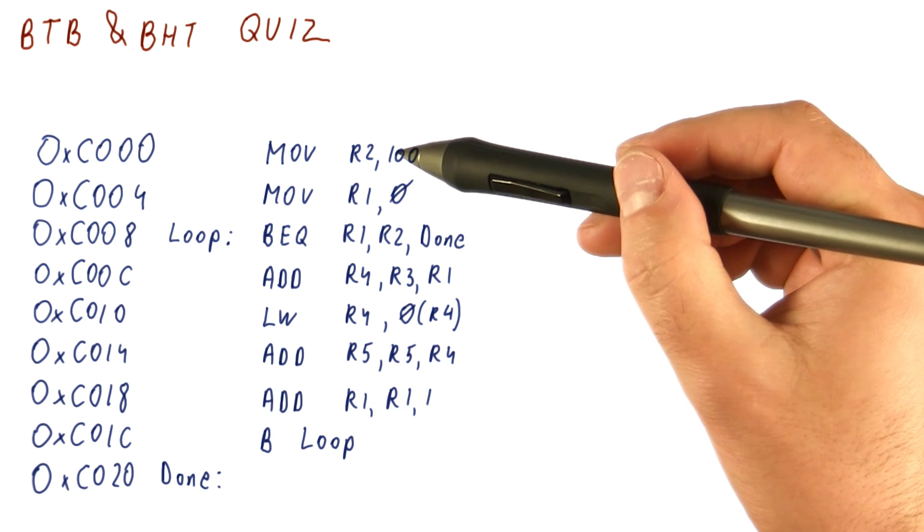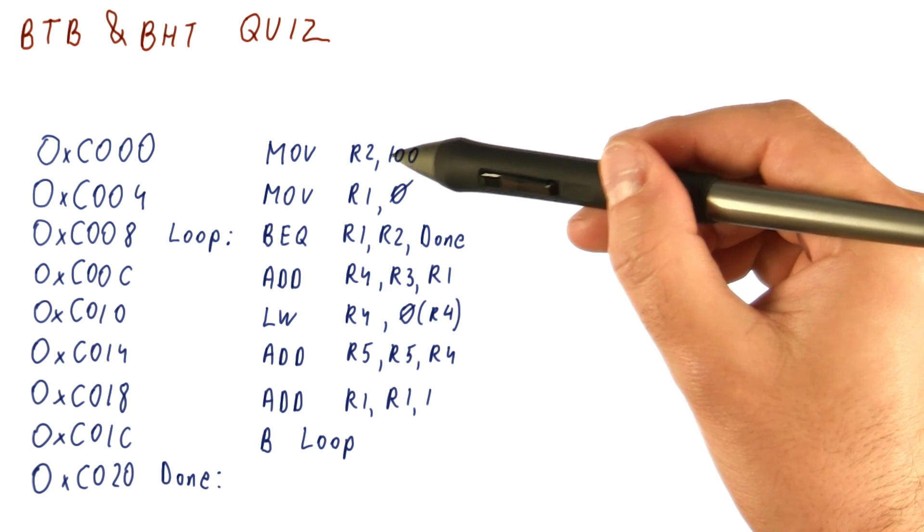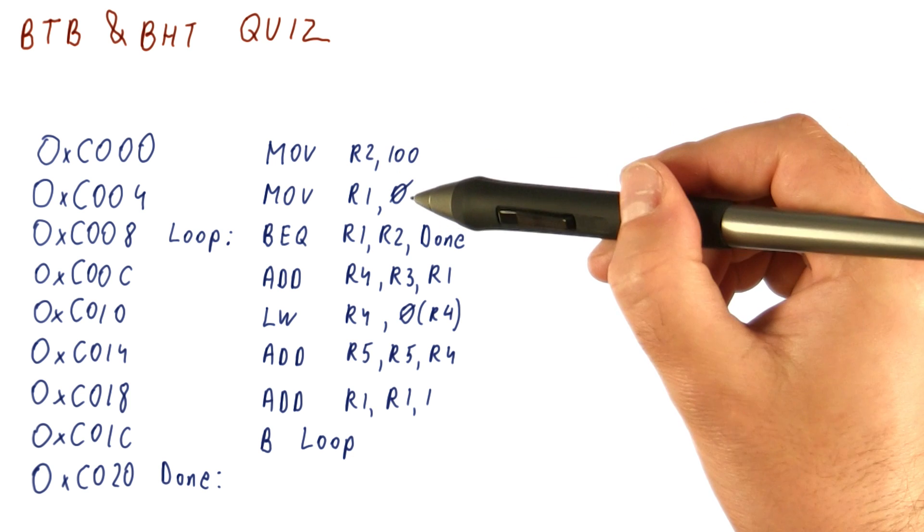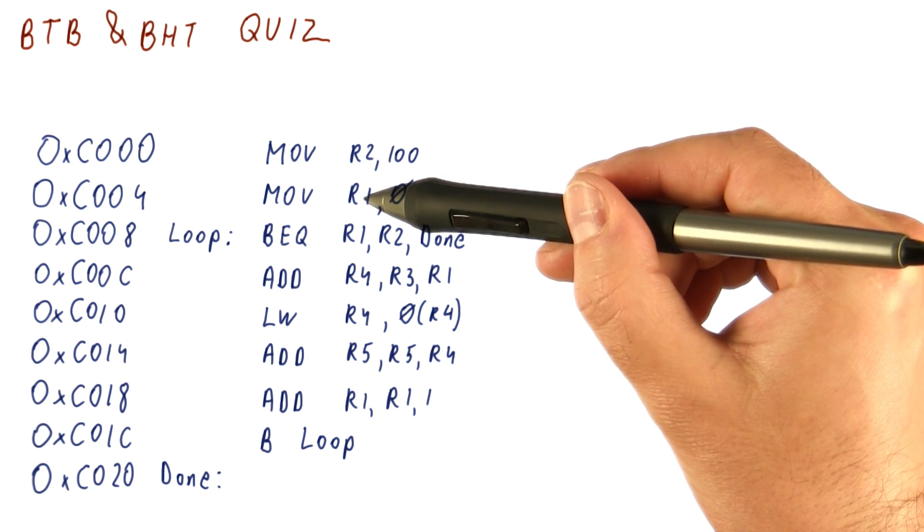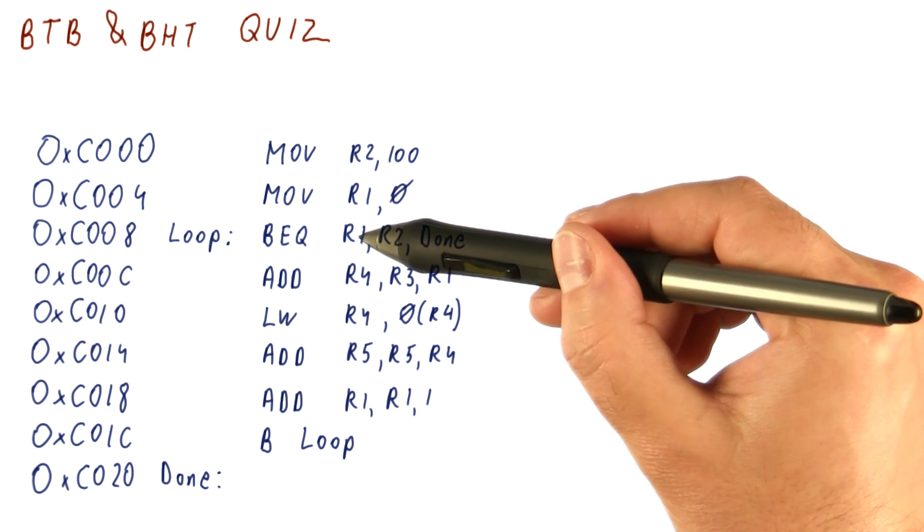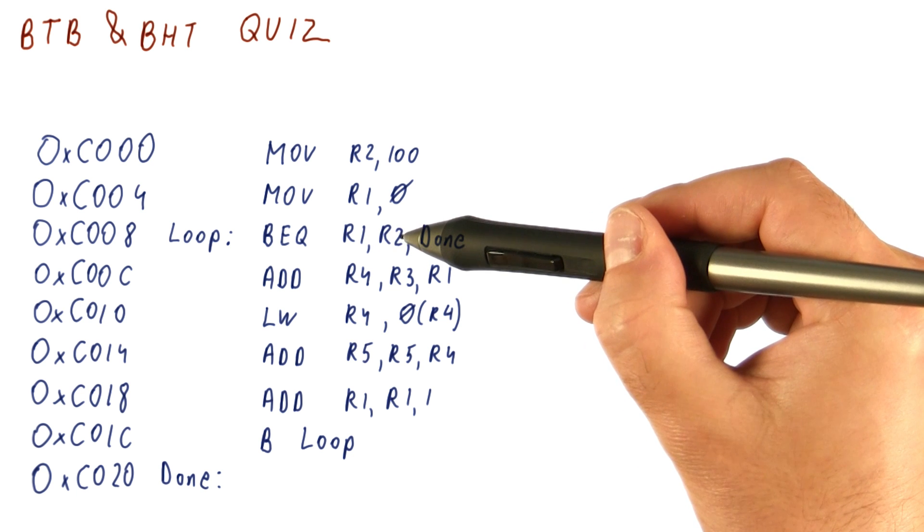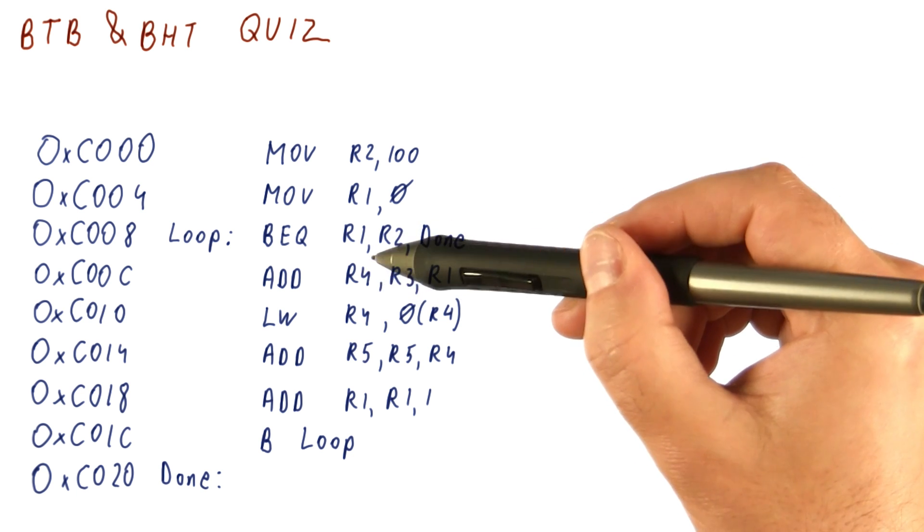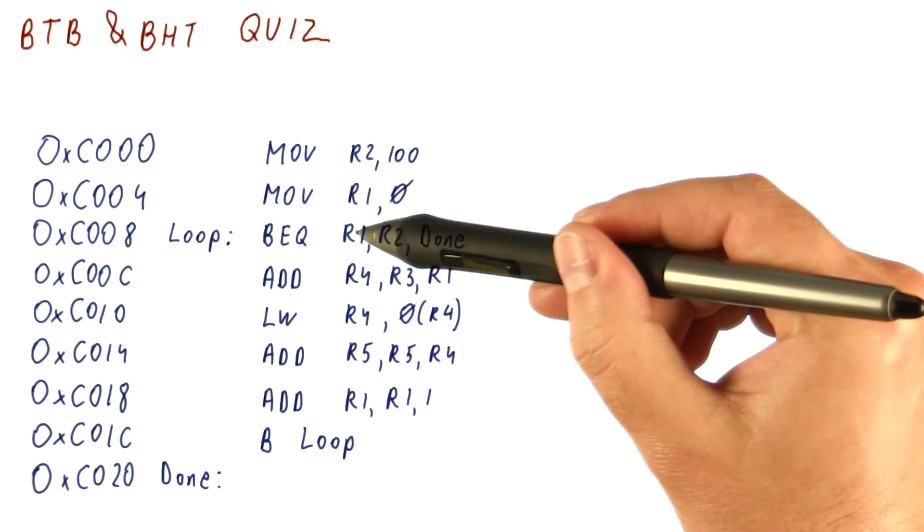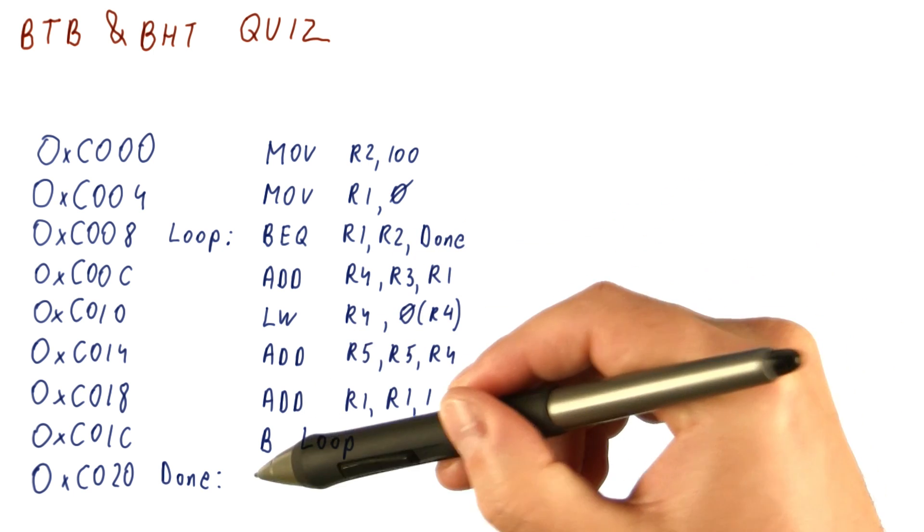So what this program is doing is it's moving 100 into R2. It's moving 0 into R1. And then as long as R1 and R2 are different, it's going to continue here. Once R1 and R2 are the same, it's going to jump to the done label and exit this loop.